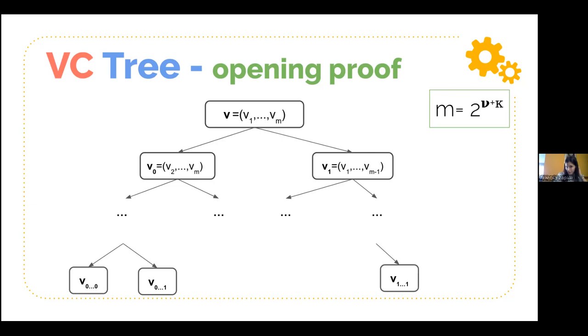And then what we offer our prover is the following trade-off. Take m as a power of two and choose nu and kappa such that two to the nu plus kappa equals m. We enforce that m is a power of two.